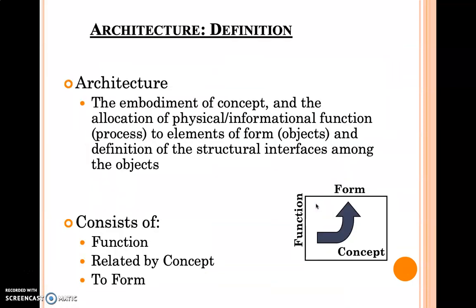Basically, if you will define it in words, this is embodiment of concept and the allocation of physical information to the elements of form and definition of structural interface among the objects. It consists of three words which is function, form, and concept. If you will include these three terms, then that is called as product architecture.